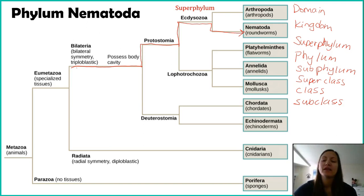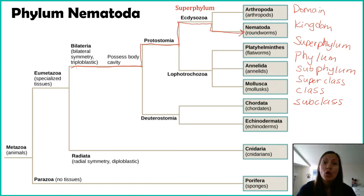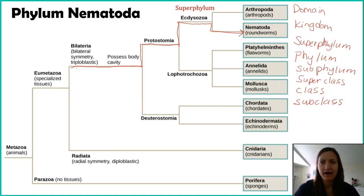We see these extra classification levels a lot in this section, particularly with the ectysozoans, just because there are so many of them. There's so much diversity within this part of the kingdom that scientists wanted to break it down even more before even going to the phylum level. So we're in superphylum ectysozoa, and the phylum we're going to talk about is phylum Nematoda.